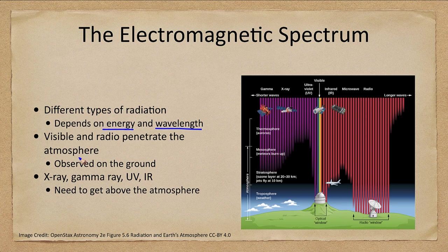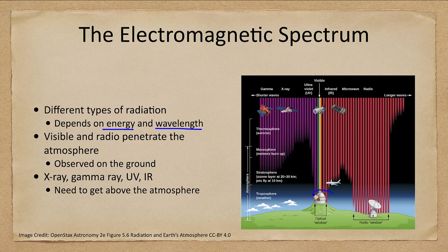And what we look at, which ones we can see from the ground. Well, we can see visible light. Visible light makes it through our atmosphere, as do radio waves.